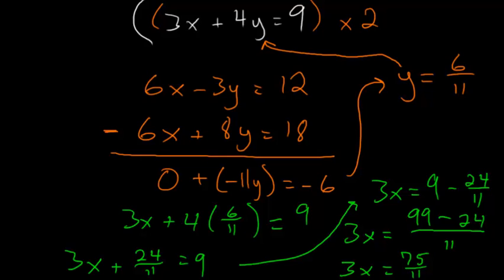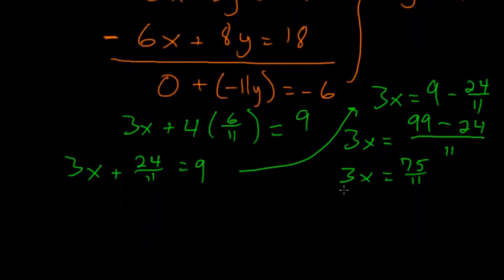Now dividing each side of the equation by 3, we can just divide 75 by 3 so that we have x is equal to 25 over 11. And since 11 is prime and it doesn't go into 25, this is as simple a fraction as we can make it.